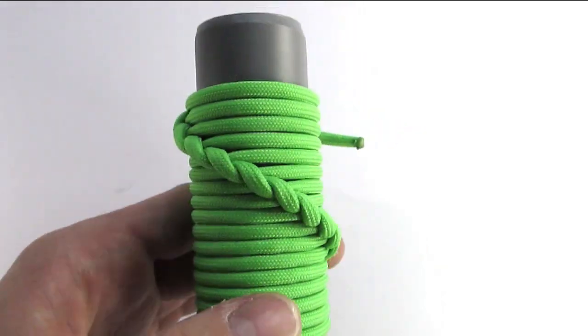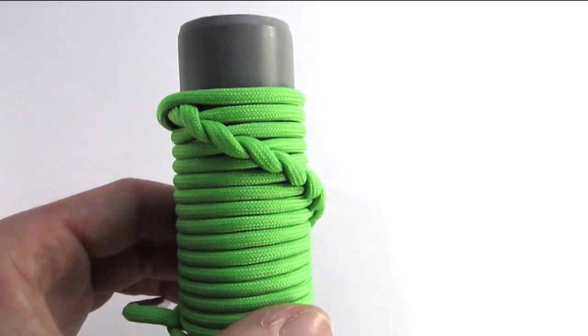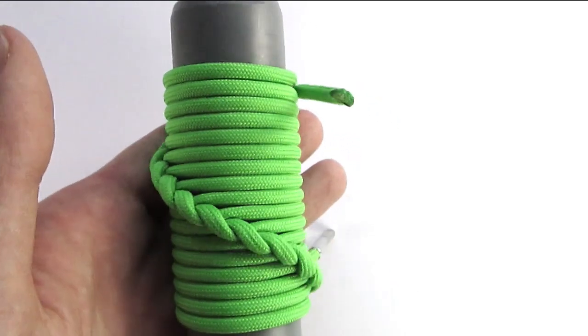This is a longer length of half hitching. And as you can see it does form a spiral.